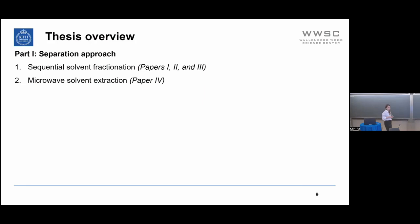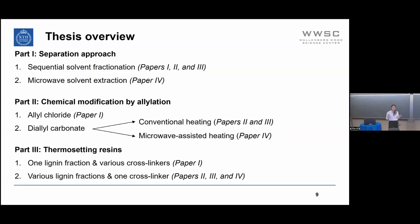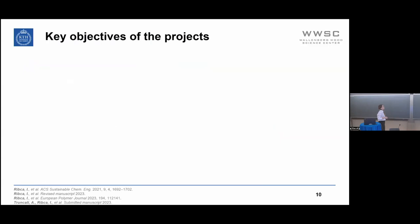This thesis was structured in three parts. In the first part, we discussed separation approaches — sequential solvent fractionation and microwave solvent extraction. The second part was chemical modification by allylation using allyl chloride or diallyl carbonate, with one study by conventional heating and one by microwave-assisted heating. The third part studied the thermoset ingredients: one approach keeping the lignin fraction constant while changing the cross-linkers, and the second changing the lignin fractions while keeping the cross-linker constant.